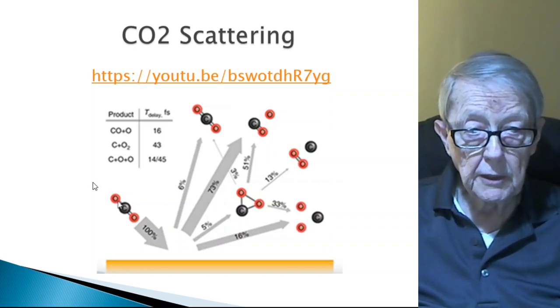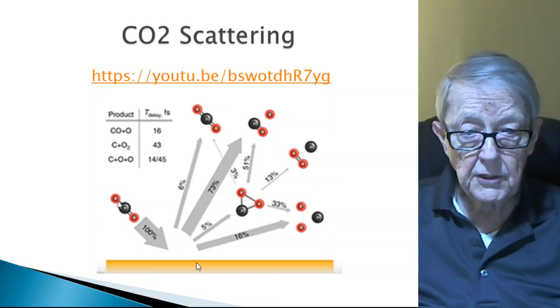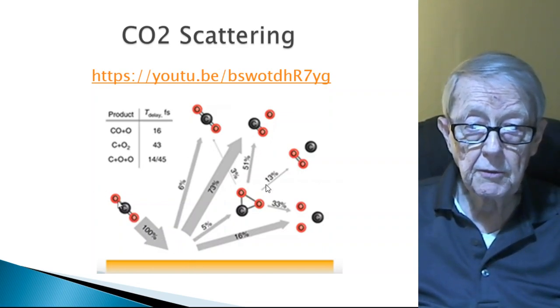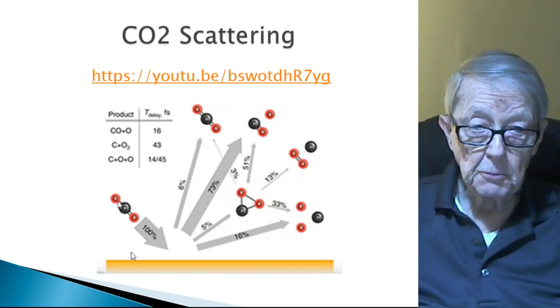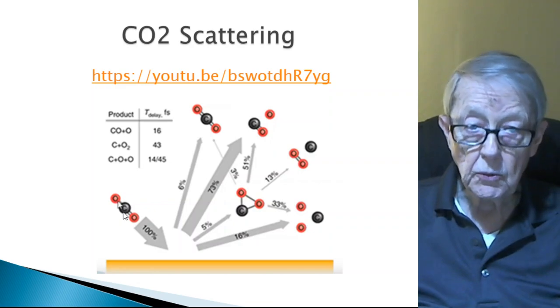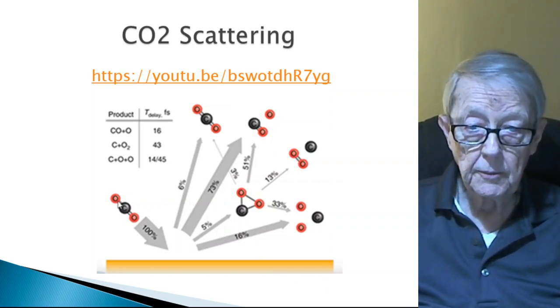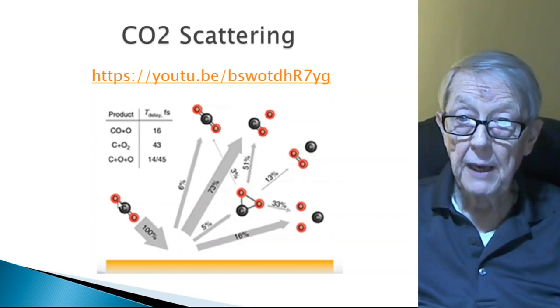And the final one was CO2 scattering. They shoot a CO2 molecule real fast at a surface. Some of them just bounce off. The rest of them split up in certain ways. They're smashing the CO2 just by literally throwing it against a wall. So, different ways of smashing atoms.